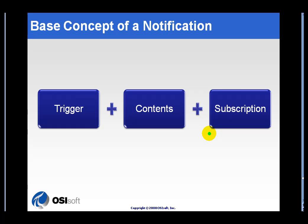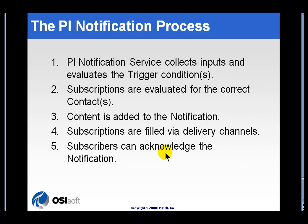Once you've defined a trigger and defined contents, you can specify who gets subscriptions to this. There's different options within the subscriptions arena, where you can decide how many times you're going to send somebody a notification, whether you keep sending it until they acknowledge, or whether acknowledgement is not required. That's the base concept of a PI Notification.